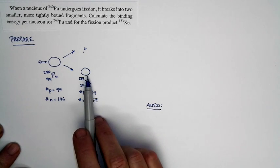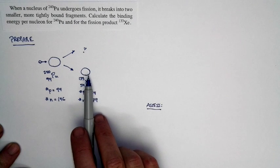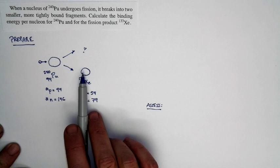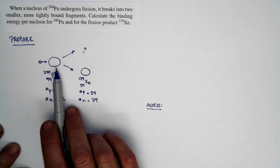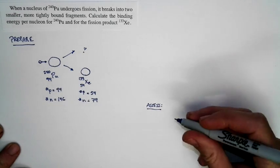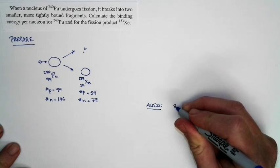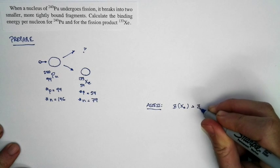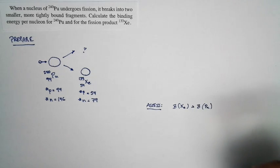We know, we're told, that this fission product is more tightly bound. We're told that in the problem statement. So we expect this one to have a higher binding energy per nucleon than the original nucleus, and so we can use that to check. The binding energy of xenon better be more than the binding energy of the plutonium. We expect that to be true.